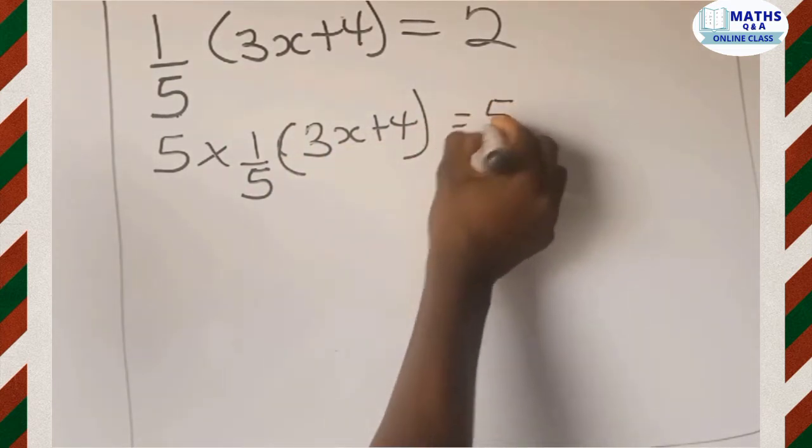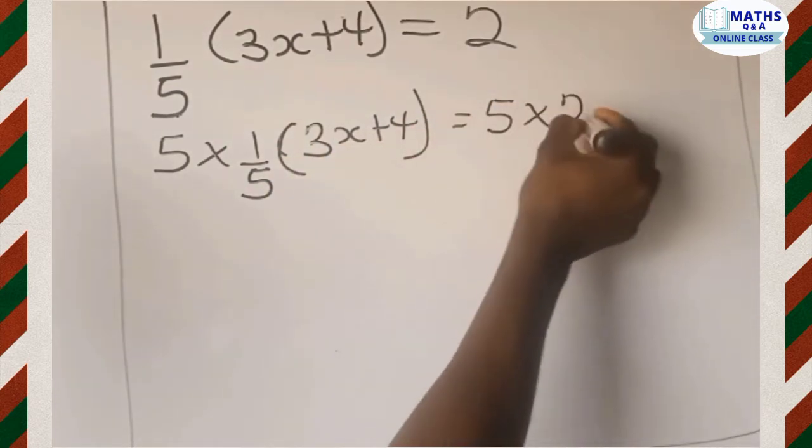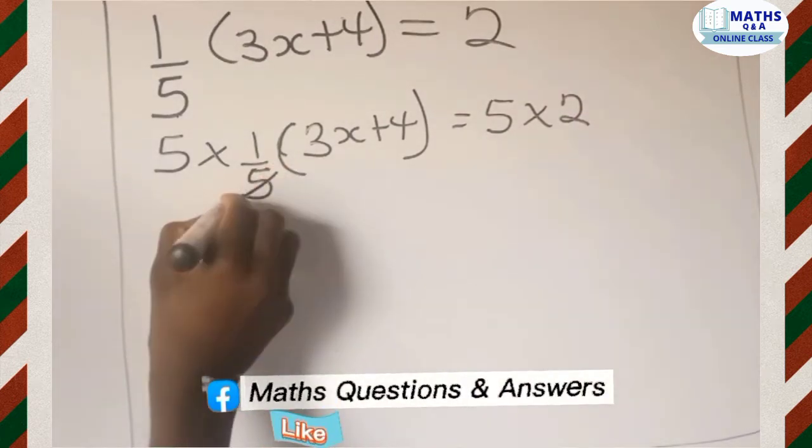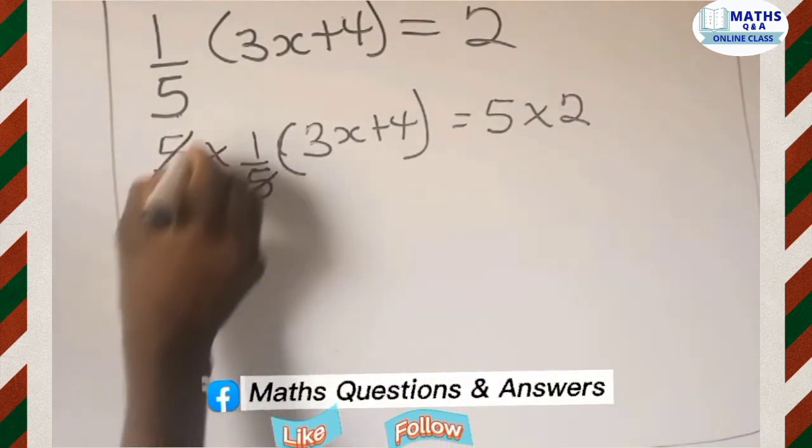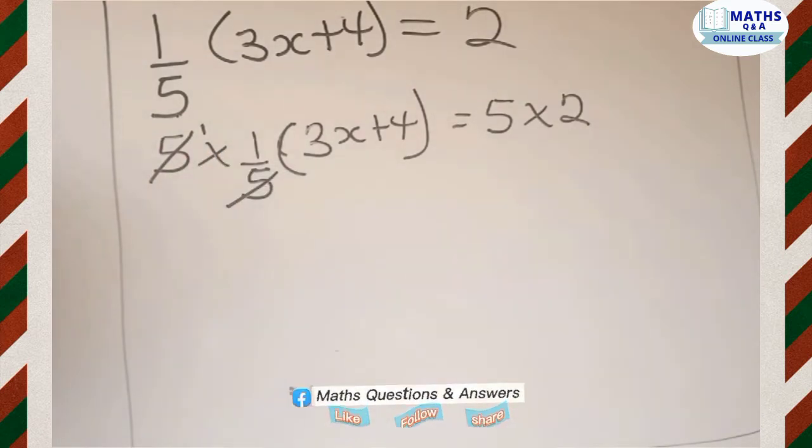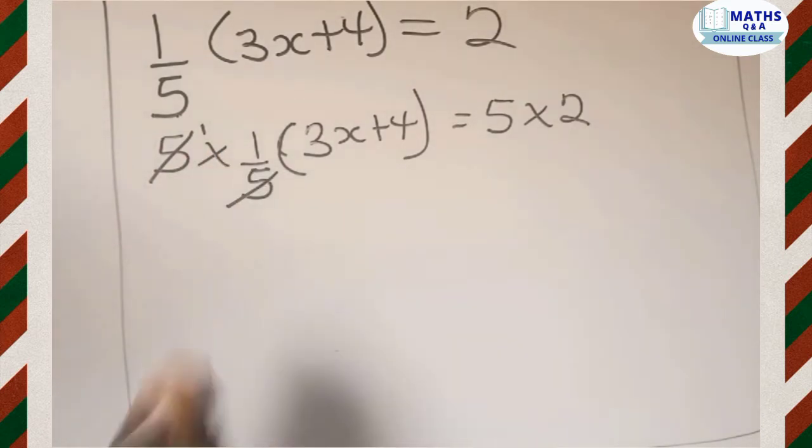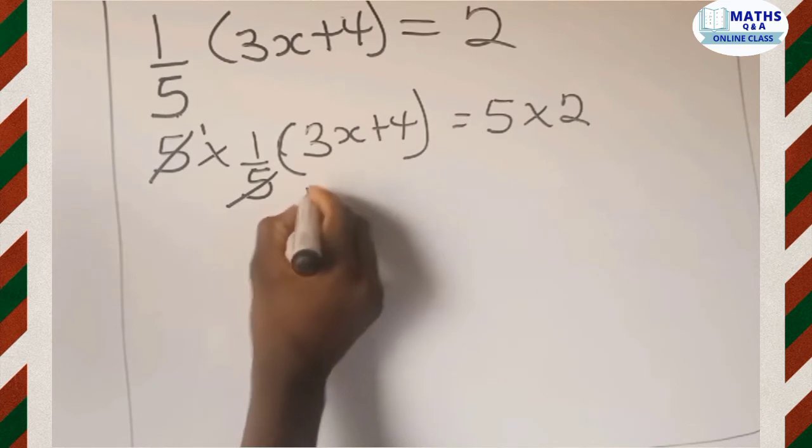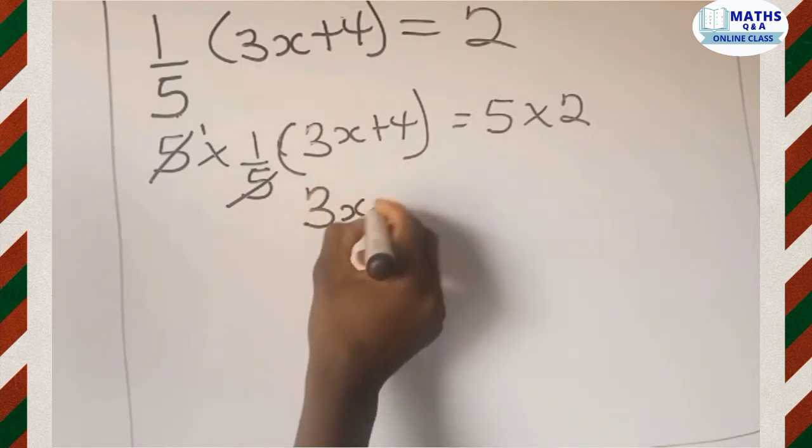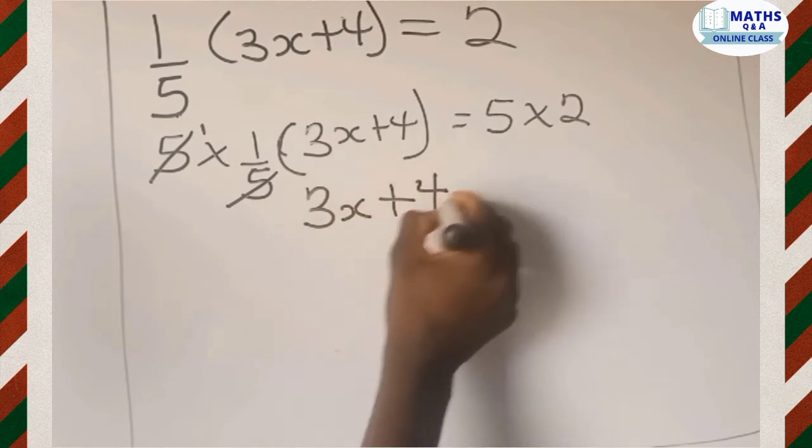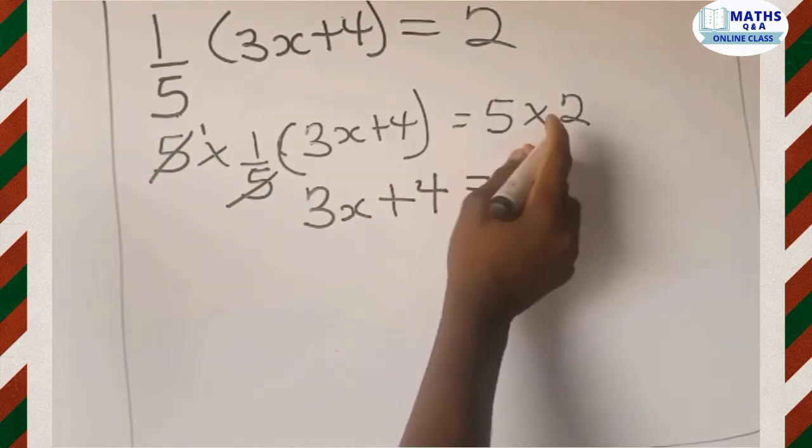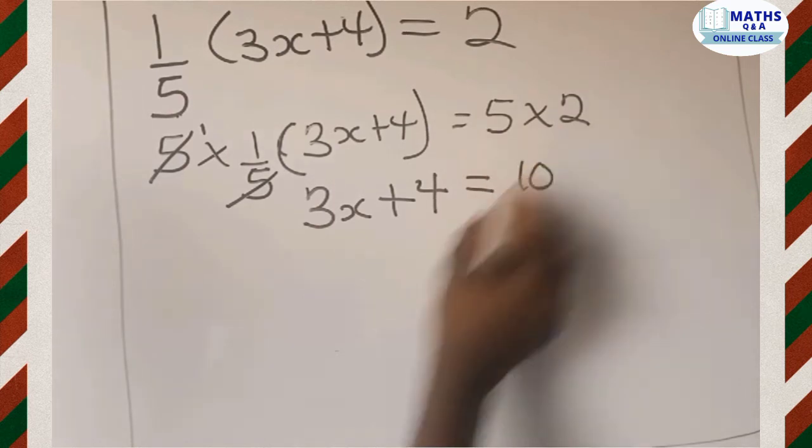Now this 5, we divide this 5 which gives 1. 1 multiply 1 is the same as 1. So 1 multiply 3x gives 3x here. Then 1 multiply 4 gives 4, which is equal to 5 multiply 2 gives 10.